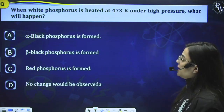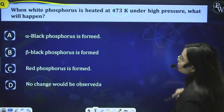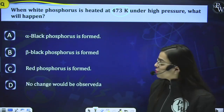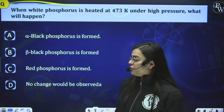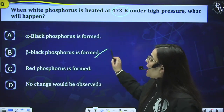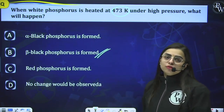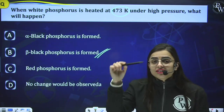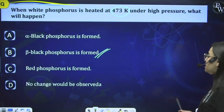Question 6: When white phosphorus is heated at 473 Kelvin under high pressure, beta black phosphorus is formed — option B is the correct answer. I have told you 3 different temperatures producing 3 different forms of black phosphorus.